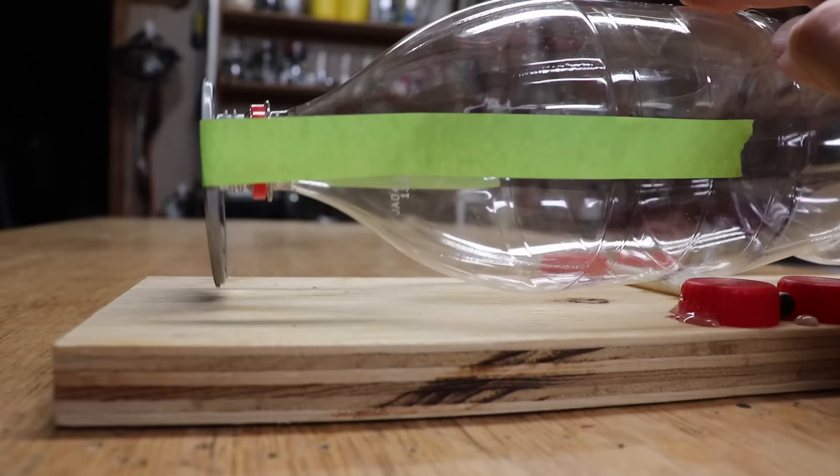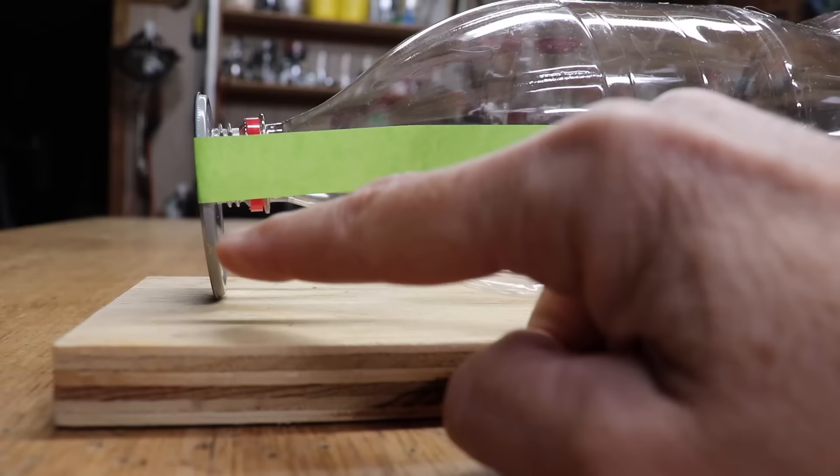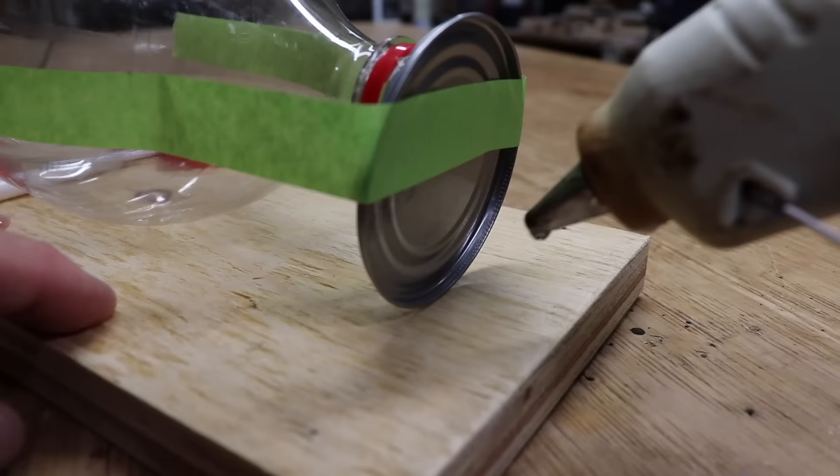And now with the bottle tilted forward and the bottle right here touching the base, this should be flush with the opening and you can go ahead and hot glue the front of the lid to the base.